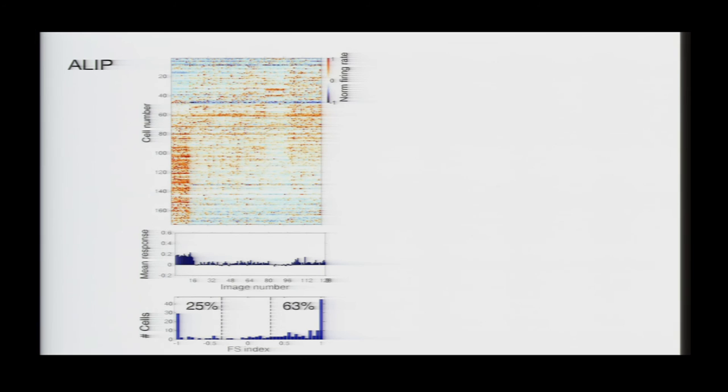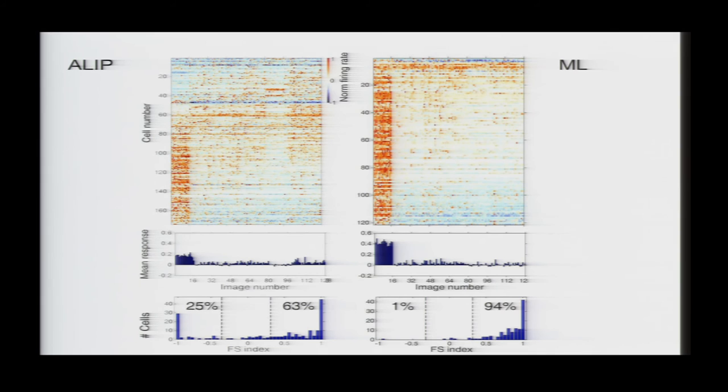So, every cell that we recorded, we showed it these 128 pictures of faces and other objects. And in AL, surprisingly, we found that there seemed to be a much smaller percentage of face-selective cells. There were many cells that didn't respond to any of the stimuli or were inhibited by faces. And this wasn't just because the face patches in this particular monkey were less face-selective, because we recorded from the middle face patch in the same monkey and repeated our previous results.